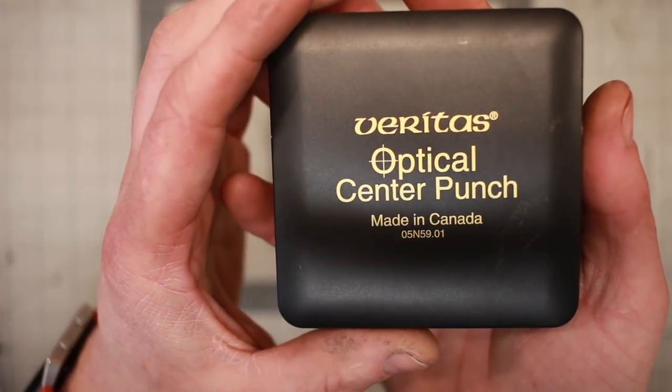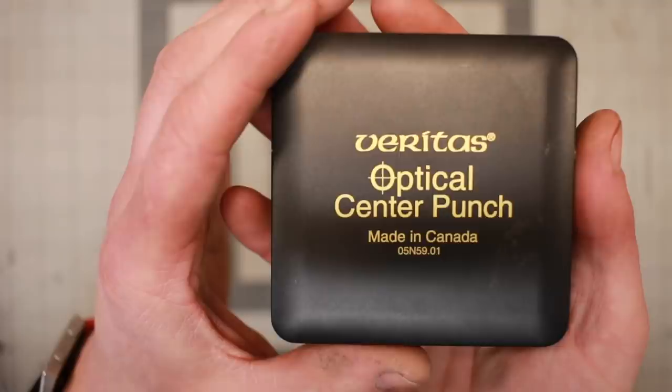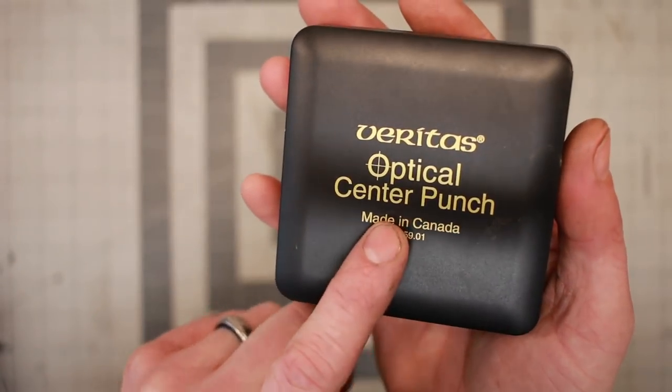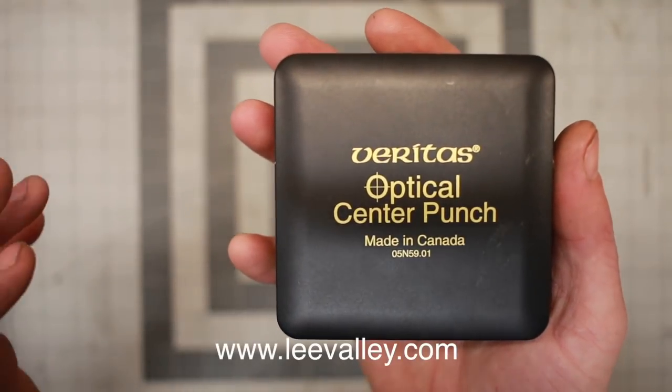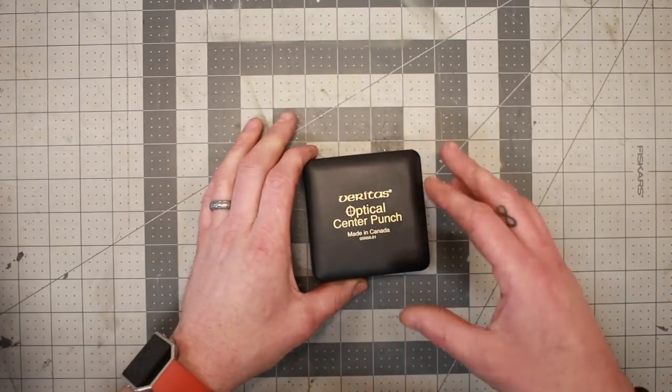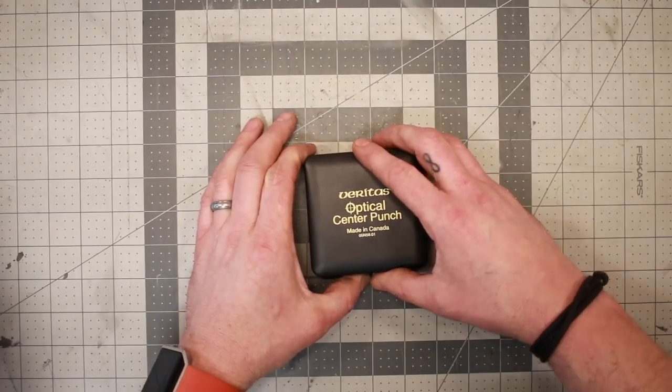This particular model I have is made by Veritas, which is the house brand of Lee Valley, made in Canada here. And if you haven't checked out Lee Valley's website yet, it's a great website, leevalley.com. I have no affiliation with them. I just buy a lot of, well, I don't buy as many tools from them as I would like, but I do buy some.